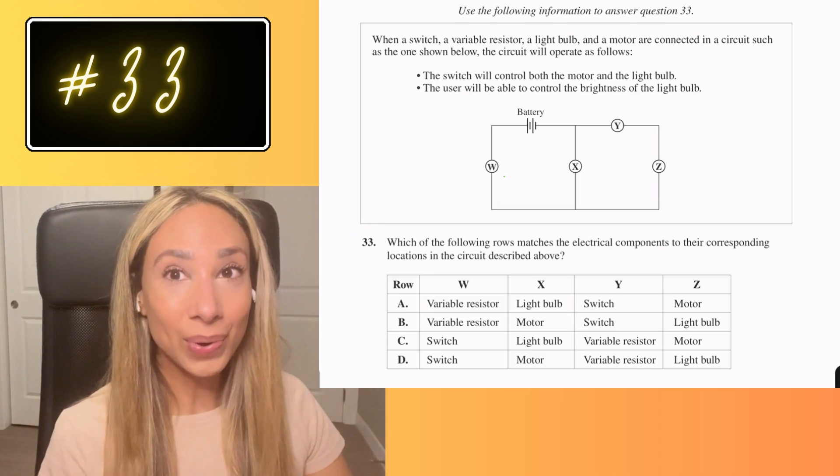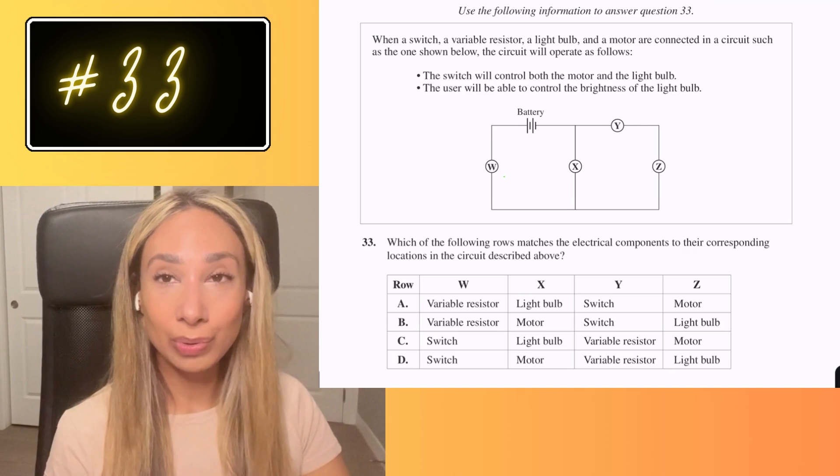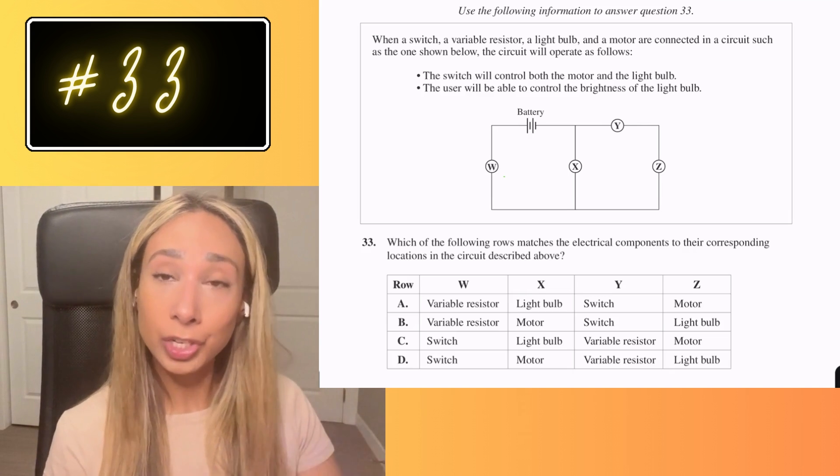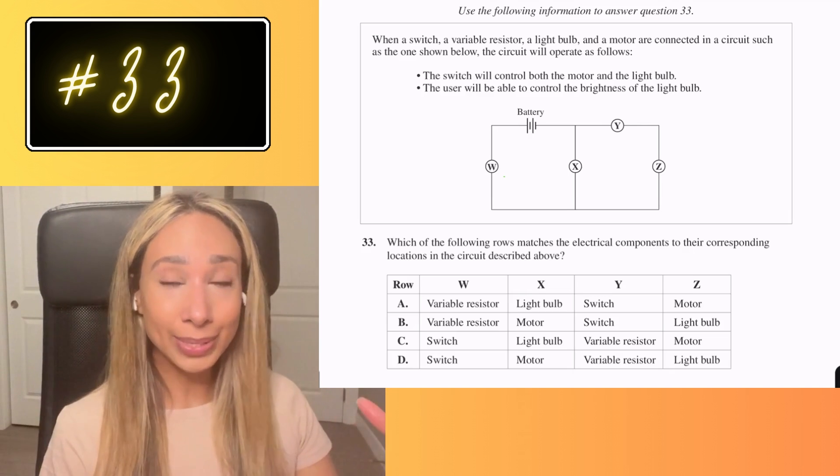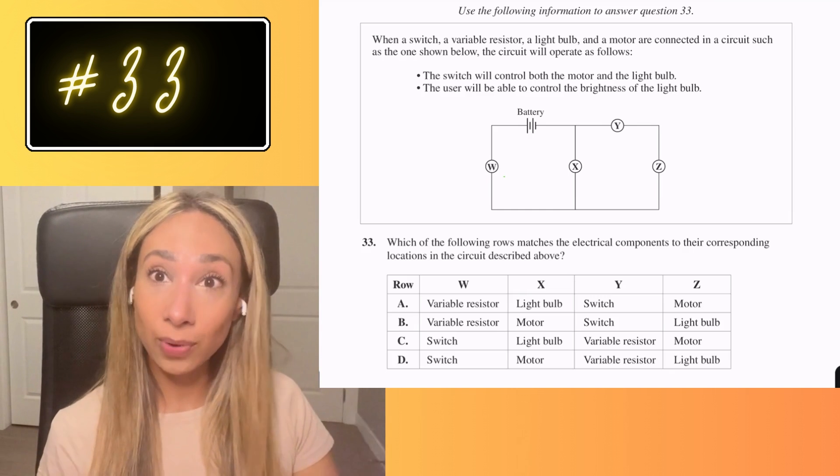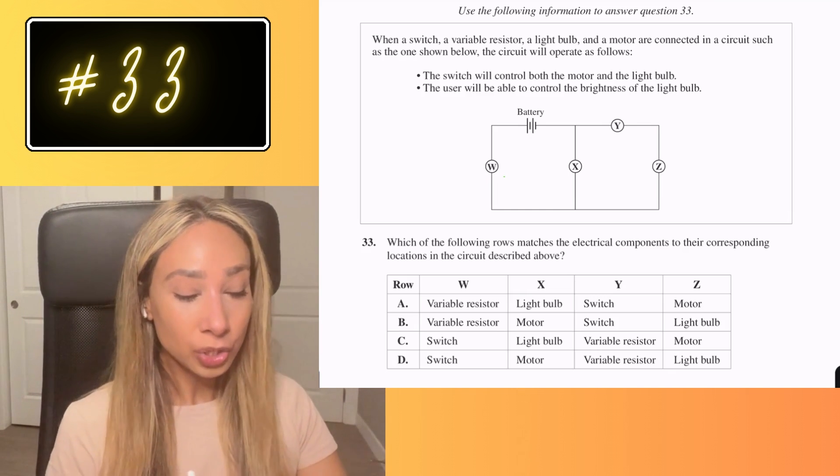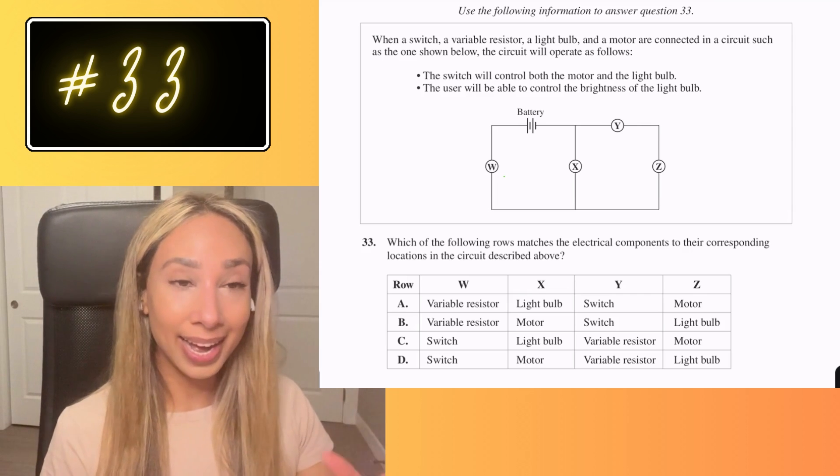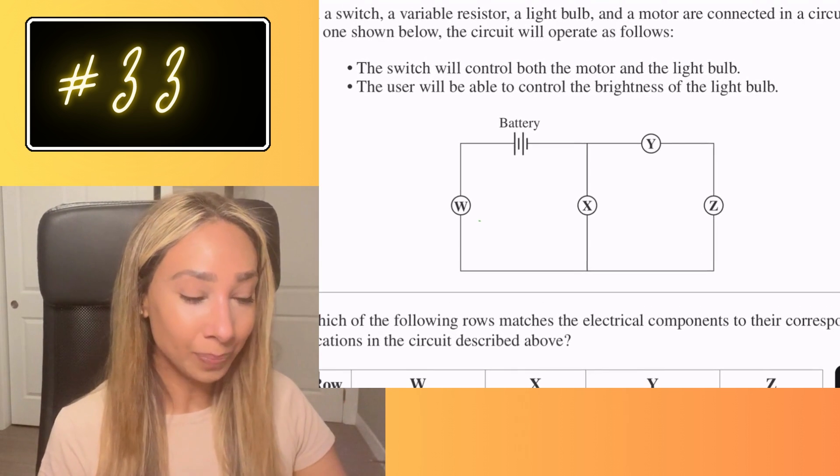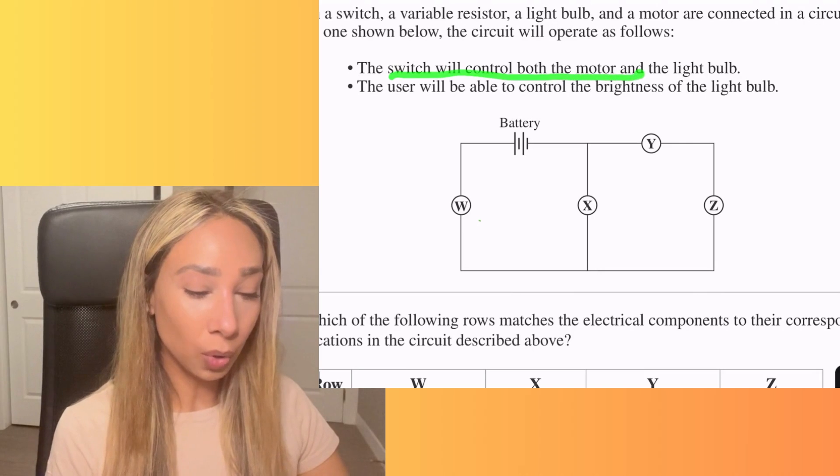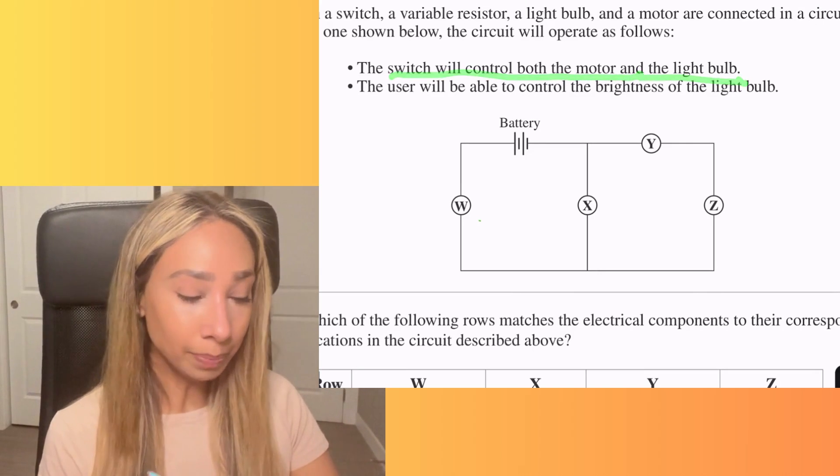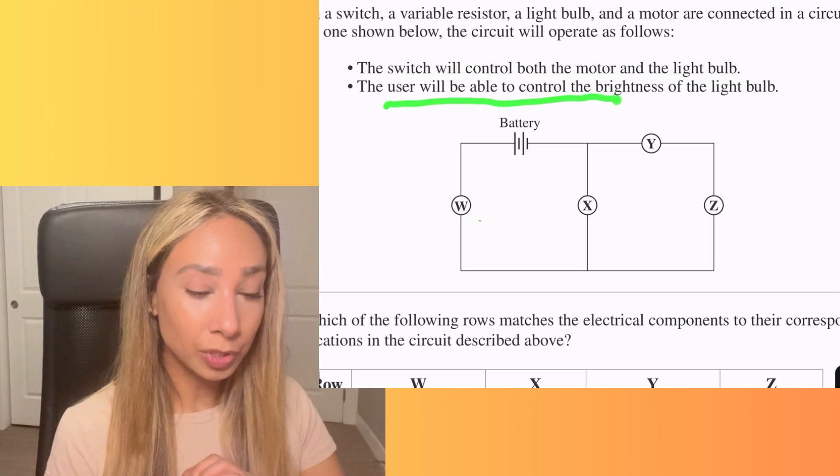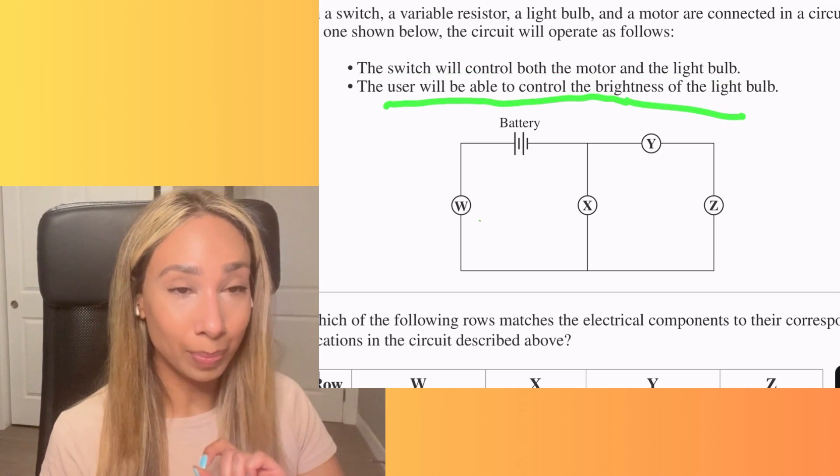Number 33. So with this question, they're asking you two different things. A, do you know your terminology? And B, do you know where to place those things in a circuit that it's going to be able to function? So with this question, there's two things to consider. The switch will control both the motor and the light bulb and the user will be able to control the brightness of the light bulb.